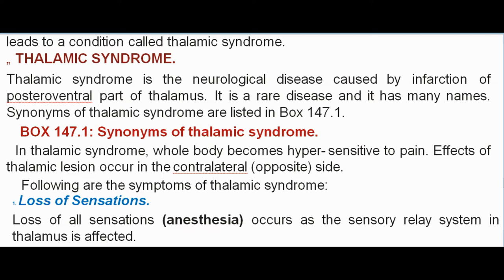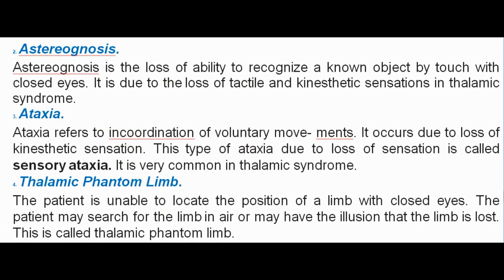In thalamic syndrome, the whole body becomes hypersensitive to pain. Effects occur on the contralateral (opposite) side. Symptoms include: loss of all sensations (anesthesia) as the sensory relay system in thalamus is affected; astereognosis — loss of ability to recognize a known object by touch with closed eyes, due to loss of tactile and kinesthetic sensations; and ataxia — incoordination of voluntary movements due to loss of kinesthetic sensation, called sensory ataxia, which is very common in thalamic syndrome.